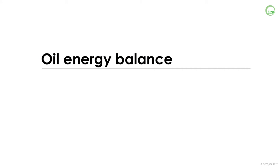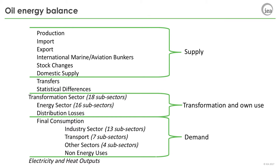Before exploring the end uses for oil, it's important to understand a basic energy balance and know what the oil products are and think about what the flows of those products are going to be. For any energy commodity, first there is supply data. Total primary energy supply is equal to indigenous production, plus imports, minus exports, and plus or minus stock changes and international marine or aviation bunkers. Then there is energy transformation, where the energy can be converted to another energy product. In oil, this is easy to imagine as crude oil enters a refinery and comes out as a different energy product, such as gasoline.